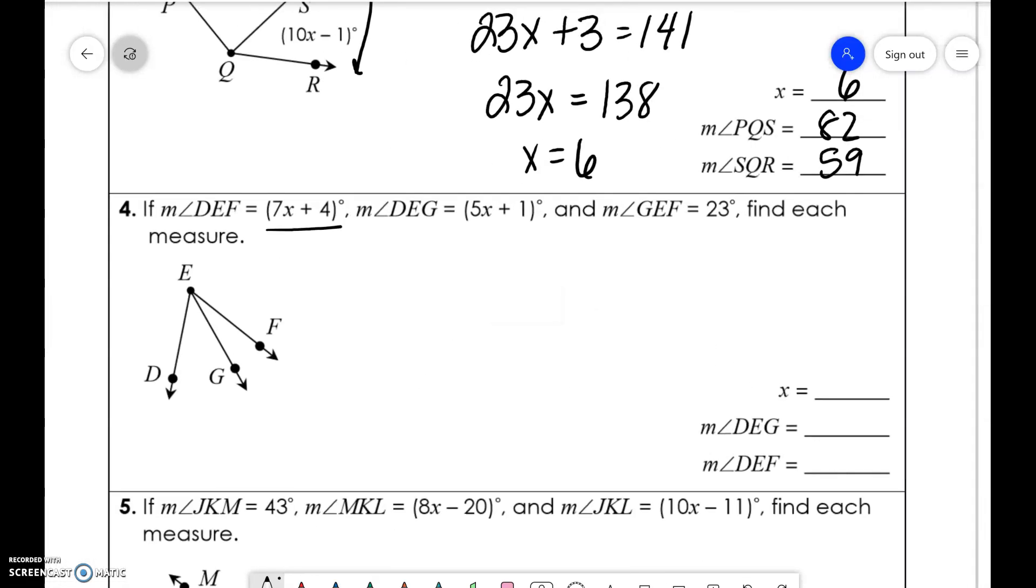So DEF is the whole angle. So 7x plus 4 is equal to DEG, which is 5x plus 1 and GEF, which is that portion, which is 23. Solving it for x.